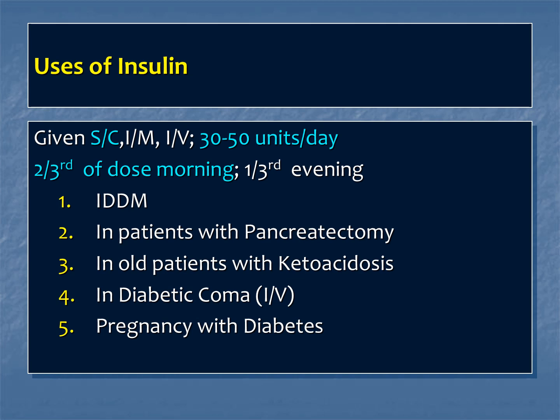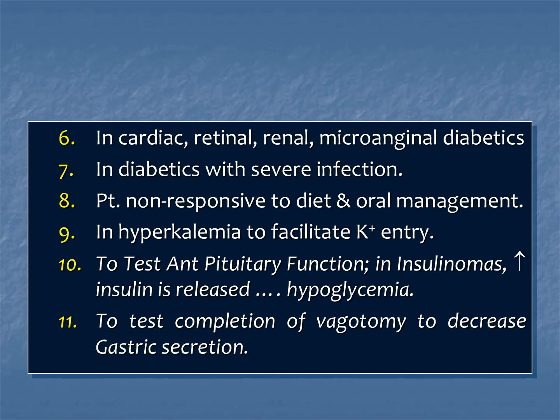Fifth is pregnancy — during pregnancy we have to use insulin if the patient has diabetes mellitus. Sixth, in cardiac, retinal, or renal microvascular complications of diabetes mellitus. Seventh, diabetic patients who have suffered from severe infection. Eighth, patients not responding to diet control or oral management must switch to insulin therapy. Ninth, in hyperkalemia — insulin facilitates potassium entry into the cell, reducing the level of hyperkalemia.